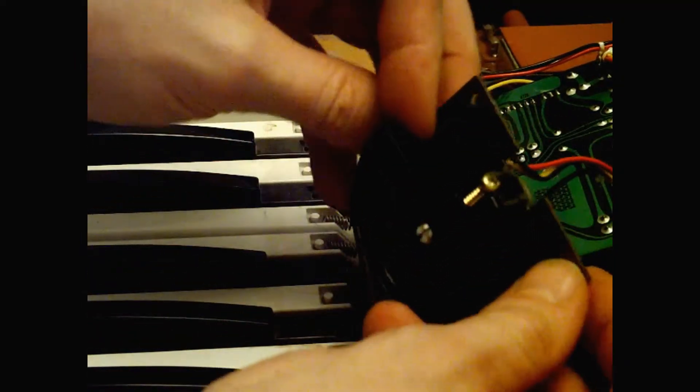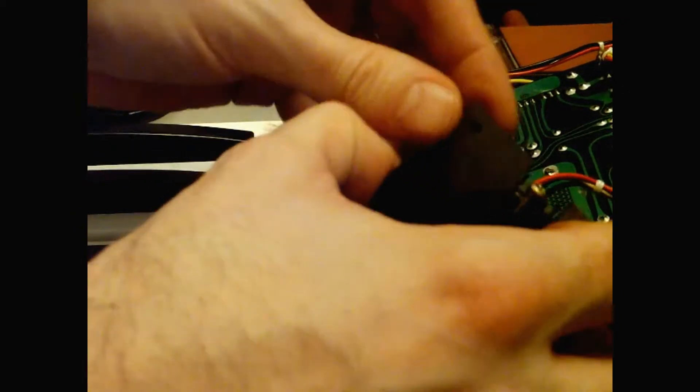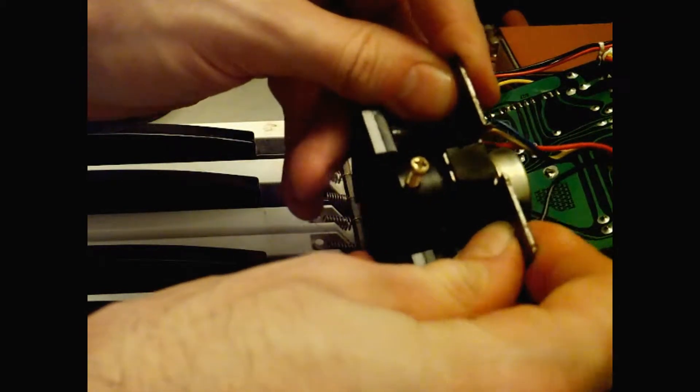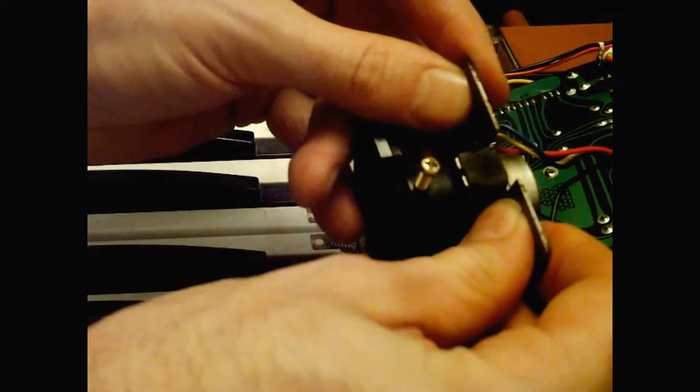And then literally it's just a case of just prizing it slowly, gently forwards, just like that, and it will just come off the spindle.